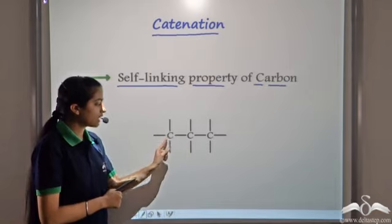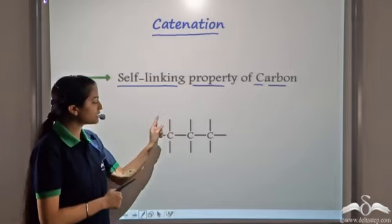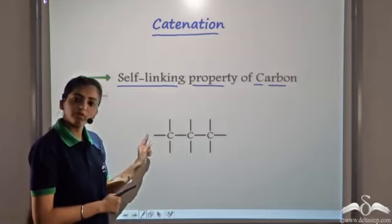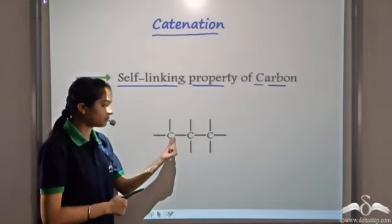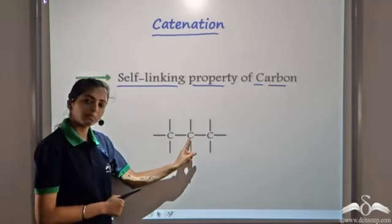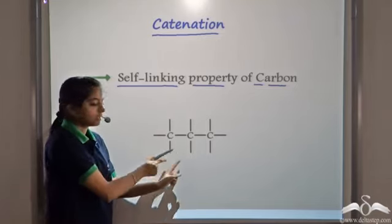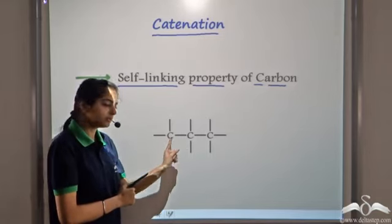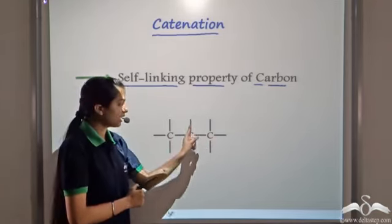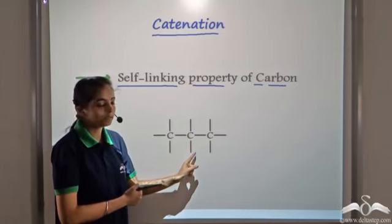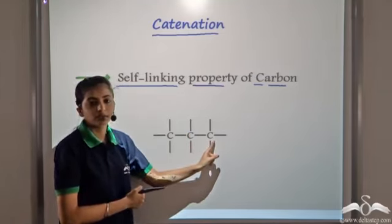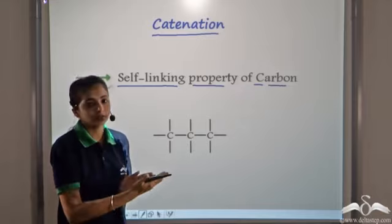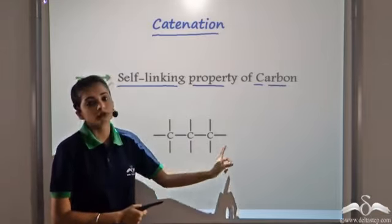When you see this carbon, it is forming 4 covalent bonds. The other atoms are not specified — they can be any atoms and can be filled in later. This carbon forms 1 bond with another carbon atom and other bonds with any atoms. Similarly, this carbon atom forms 1 covalent bond with another carbon atom, 1 covalent bond here, and 2 spaces are empty, to be occupied by any atom. This important property of carbon — catenation — helps it to link to itself, which is why it forms millions of compounds.